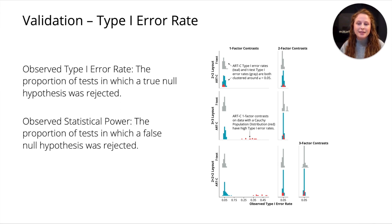ART-C doesn't find differences when they're not there, but that's only kind of useful. We still need it to find differences when they are there. That's the observed statistical power. It's the proportion of tests in which a false null hypothesis was rejected. Unlike type 1 error rate, we don't have a threshold to compare to. We just want power to be good, and we want it to be larger or as large as other methods.